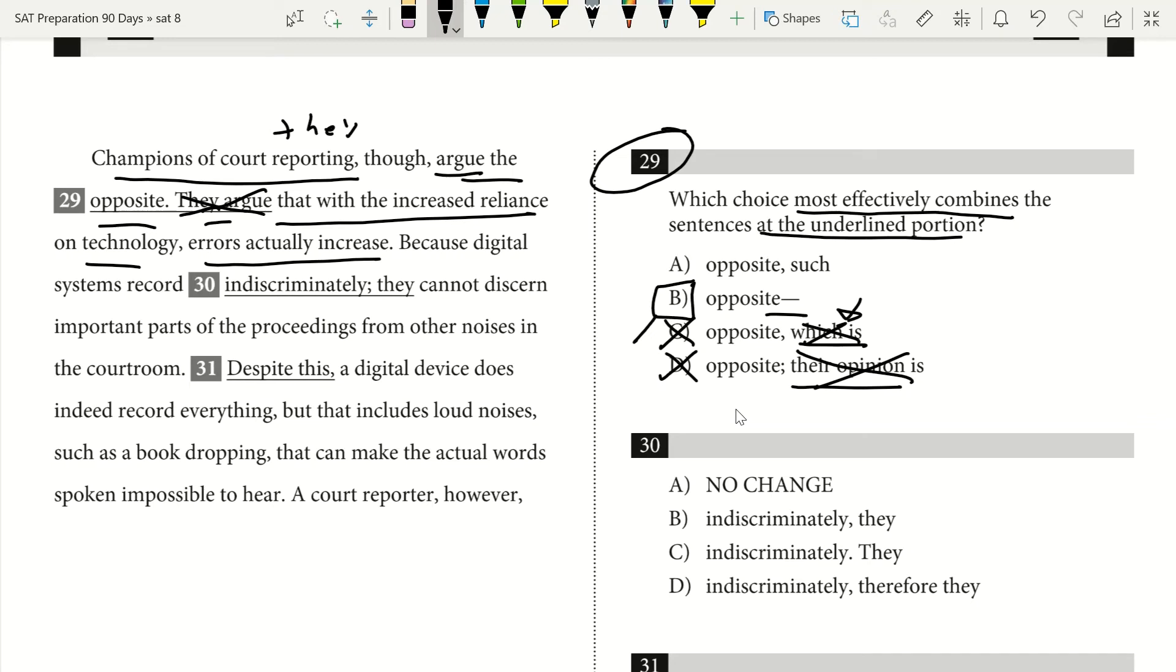If I look at A, I can show you why A is wrong as well. If I look at the word 'such,' the word such is telling me that there should be an example following it. So if I have champions of court reporting though argue the opposite, comma, such that with the increased reliance on technology, errors actually increase. When I have the word such, it would be looking for an example after that. And I don't really have an example after that. So I know A would be wrong.